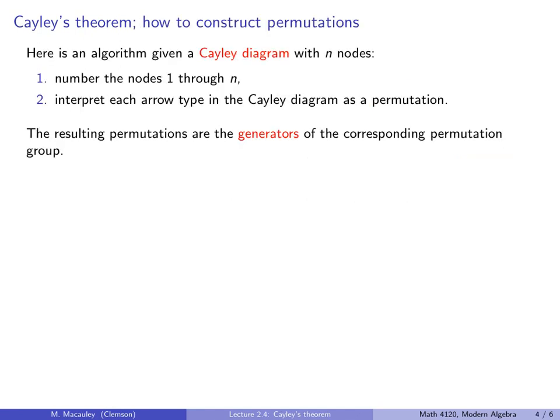Here's the first algorithm which uses the Cayley diagram. And let's suppose that the Cayley diagram has n nodes, or n vertices. First step is to number the nodes 1 up to n, doesn't matter which node gets which number. And then interpret each arrow type in the Cayley diagram as a permutation. And the resulting permutations are the generators of the corresponding permutation group.